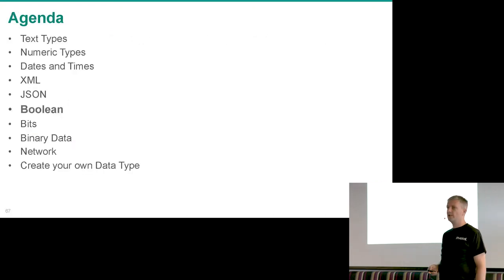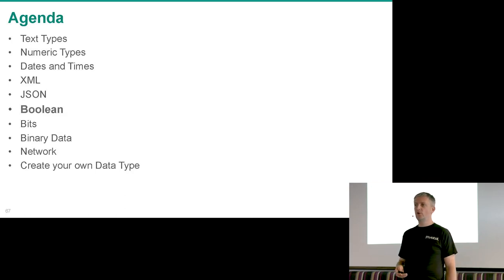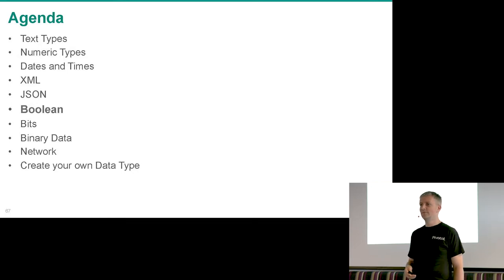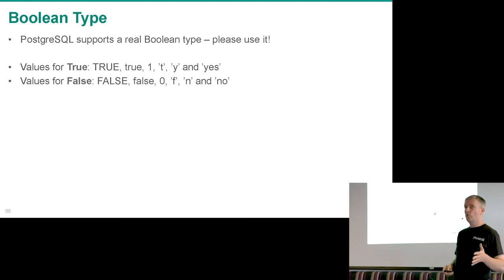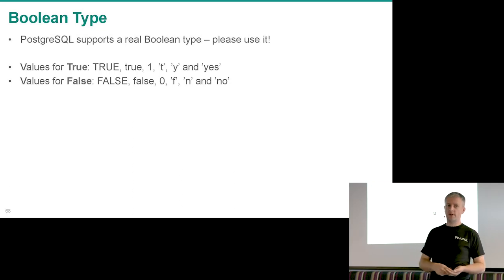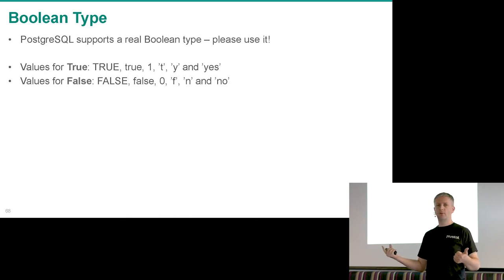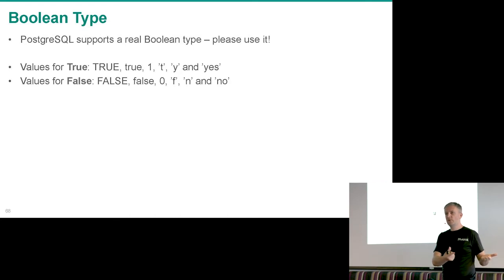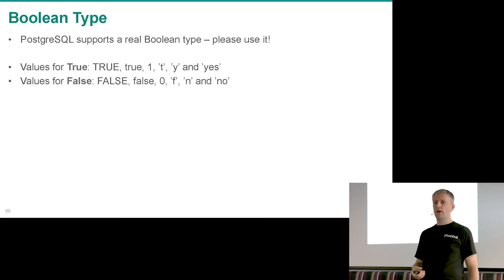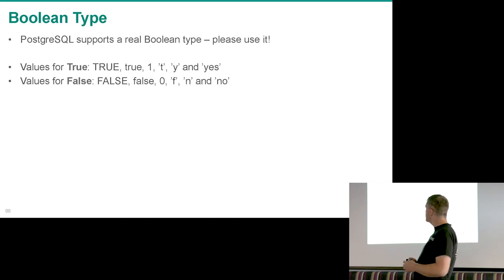Anyone using boolean types? Anyone using integer types as booleans? MySQL has a boolean type but under the hood it's an integer, so you end up with zero and one — but what does seven mean in a boolean column? The developer who wrote a seven is long gone, and when you migrate from MySQL to Postgres you have to figure out what that seven is doing in your boolean column.